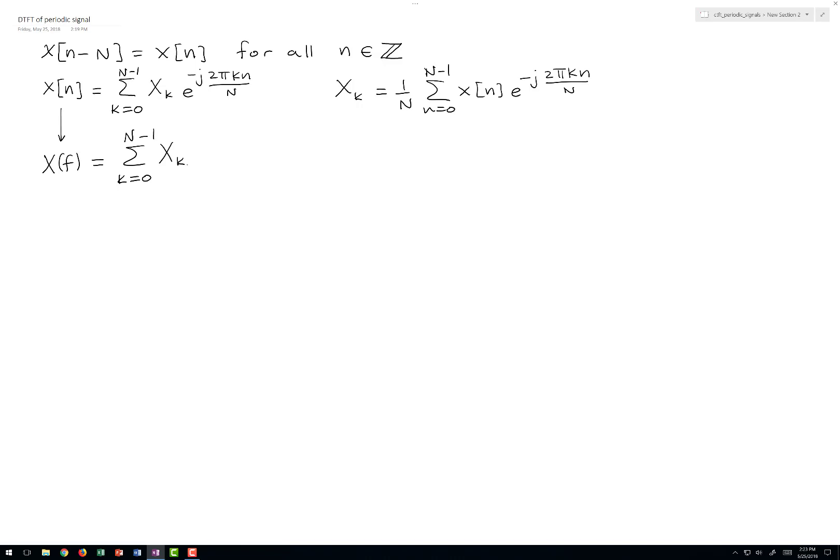And then we'll use a well-known Fourier transform pair for the complex exponential. I'll write that over here on the side just for reference. So in words, the discrete time Fourier transform of a complex exponential sequence is an infinite train of delta functions that repeats with period one. So we get an infinite number of these Dirac delta functions.